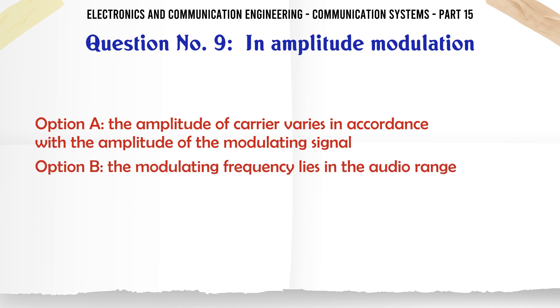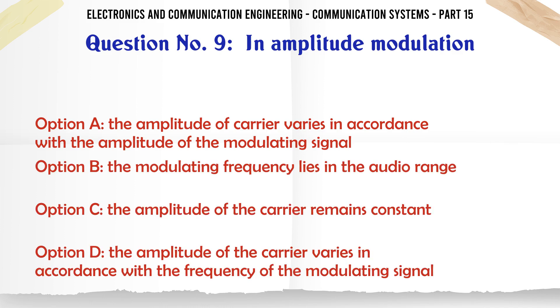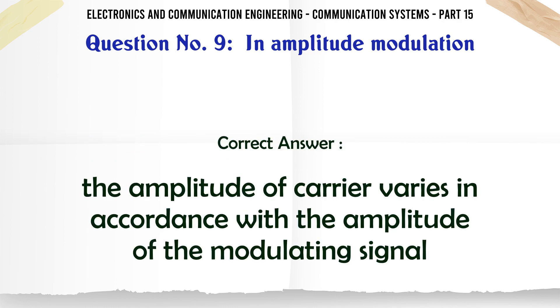In amplitude modulation: a the amplitude of carrier varies in accordance with the amplitude of the modulating signal, b the modulating frequency lies in the audio range, c the amplitude of the carrier remains constant, d the amplitude of the carrier varies in accordance with the frequency of the modulating signal. The correct answer is the amplitude of carrier varies in accordance with the amplitude of the modulating signal.